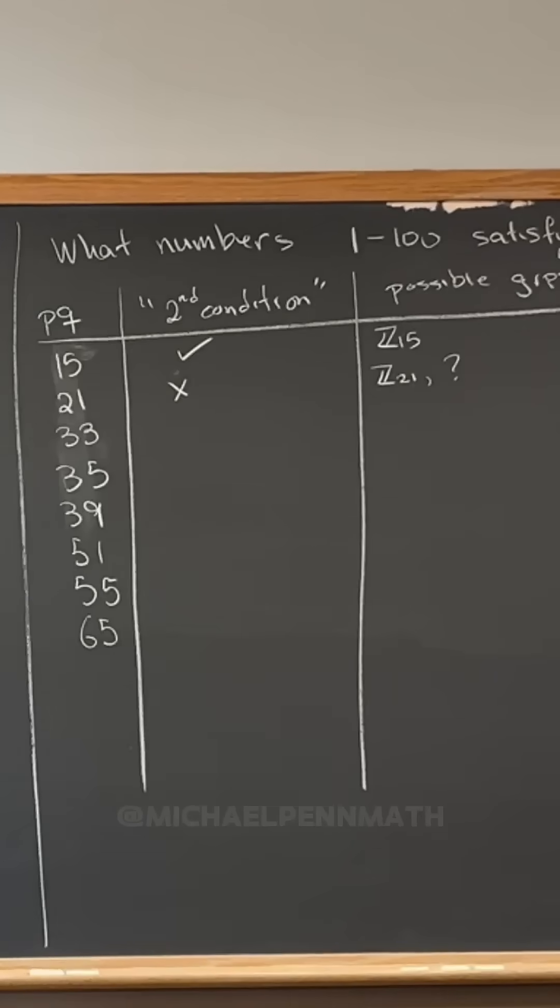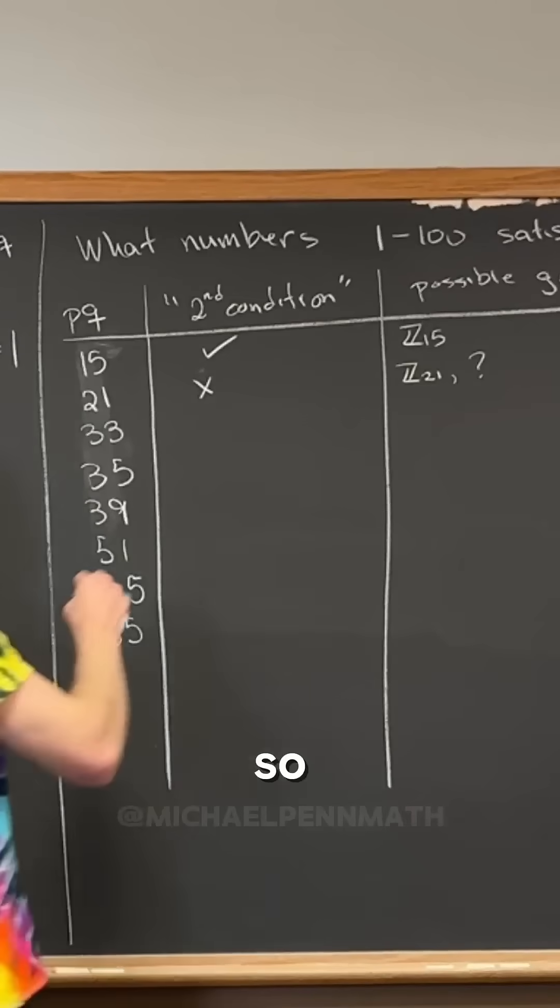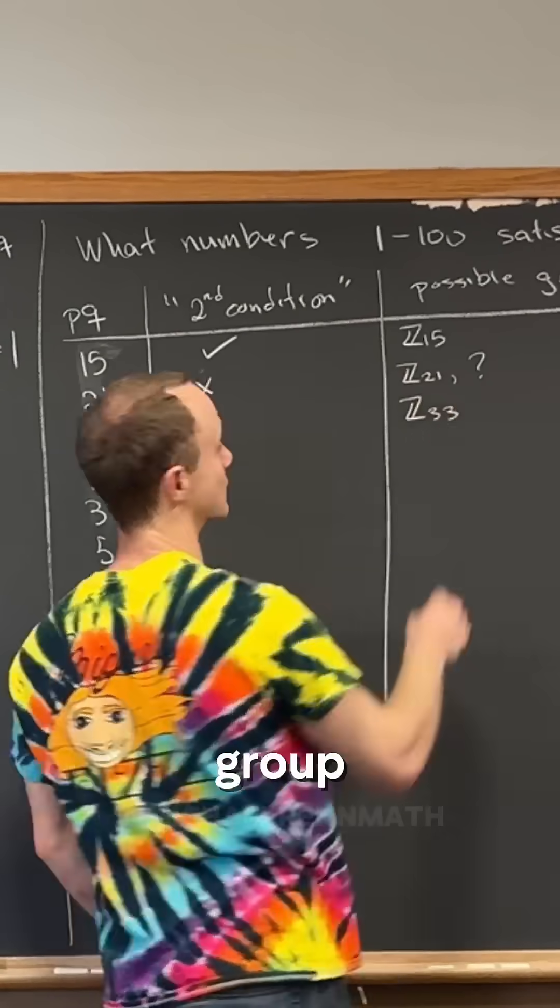Then what about 33? So is 11 congruent to one mod three? No, it's congruent to two mod three. So this does satisfy the condition. So that means Z33 is the only group right here.